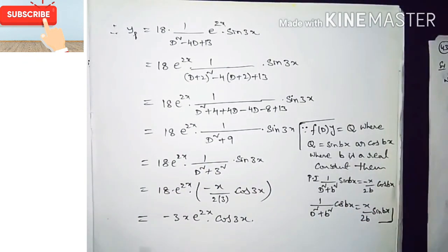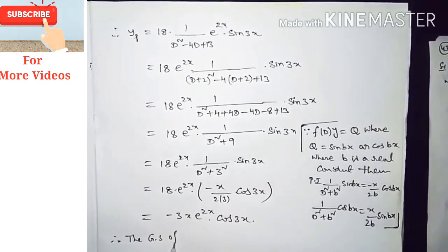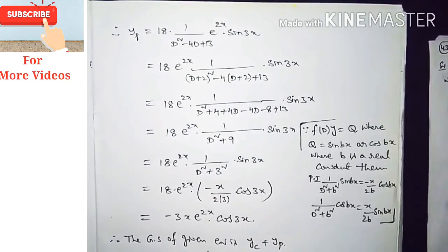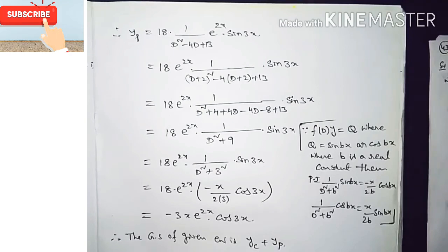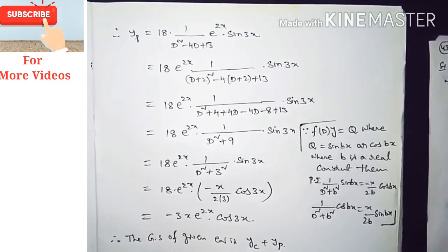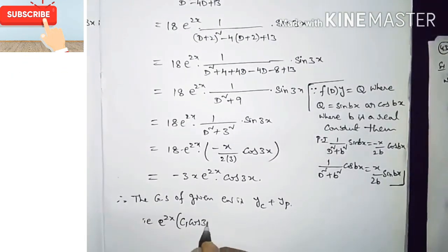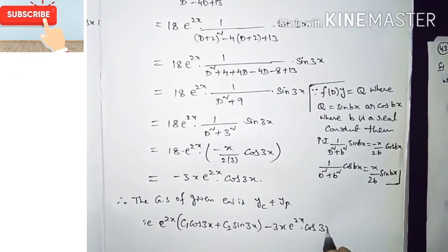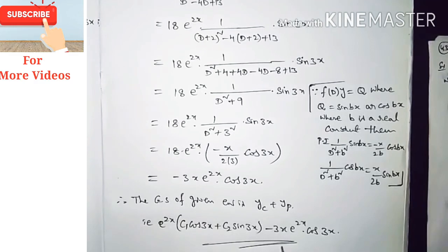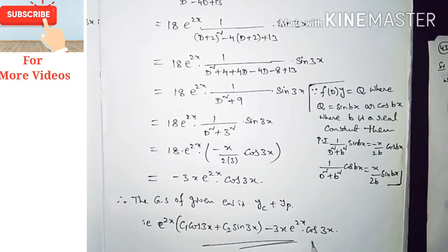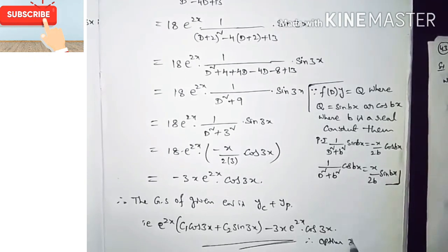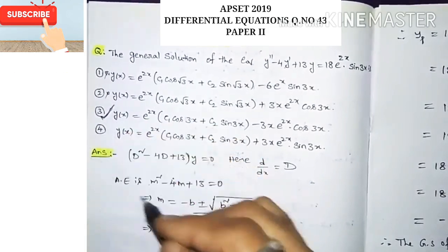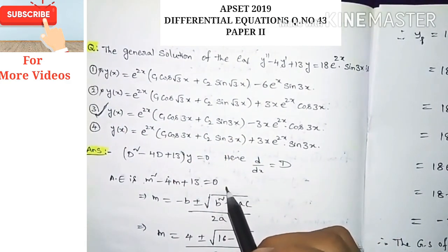Therefore the general solution of the given equation is y = yc + yp = e^(2x)·[c1·cos(3x) + c2·sin(3x)] - 3x·e^(2x)·cos(3x). This matches option number 3. So option number 3 is correct. I hope you liked this video — please share and subscribe. Thanks for watching.